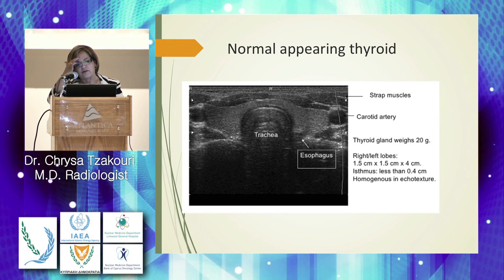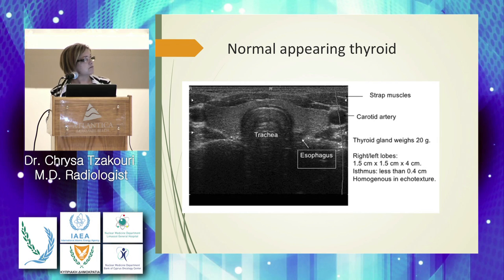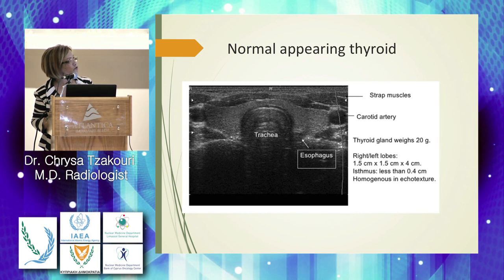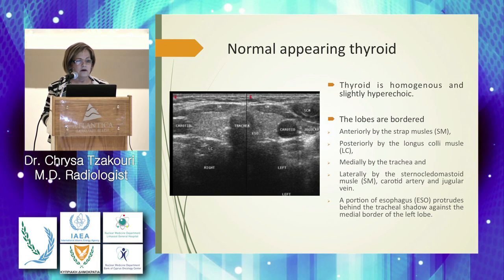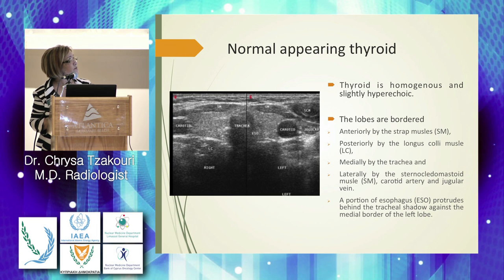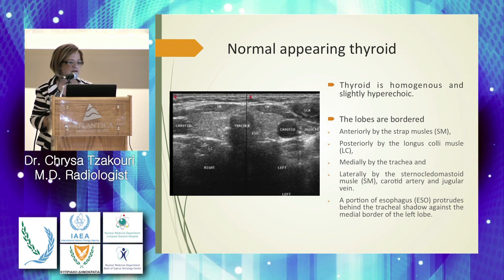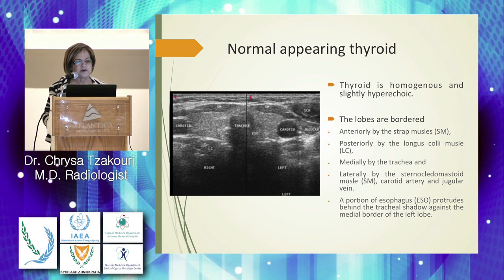The normal thyroid appearance shows normal echogenicity. Key anatomical landmarks visible on ultrasound include the trachea, esophagus, carotid arteries on right and left sides, the surrounding muscles, and the longus colli muscle. The normal thyroid appears slightly hyperechoic; both right and left sides must always be recorded.